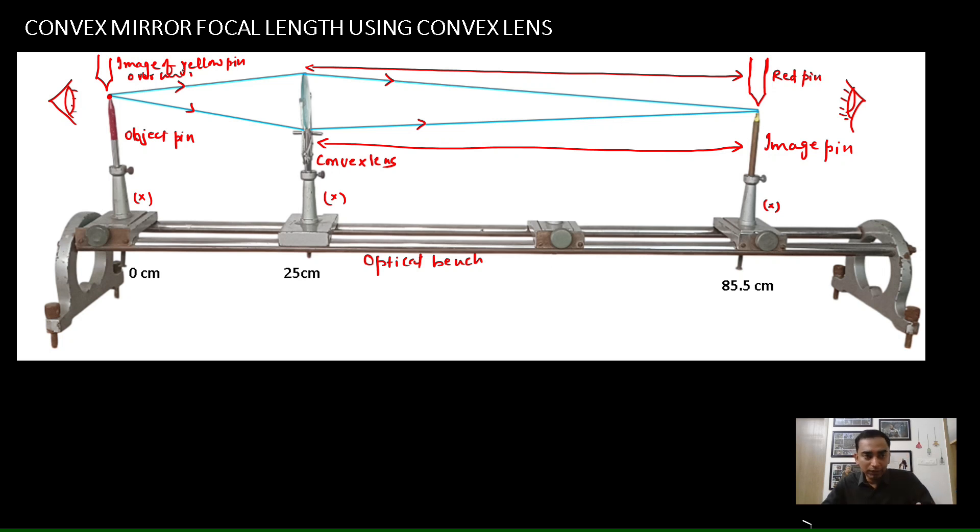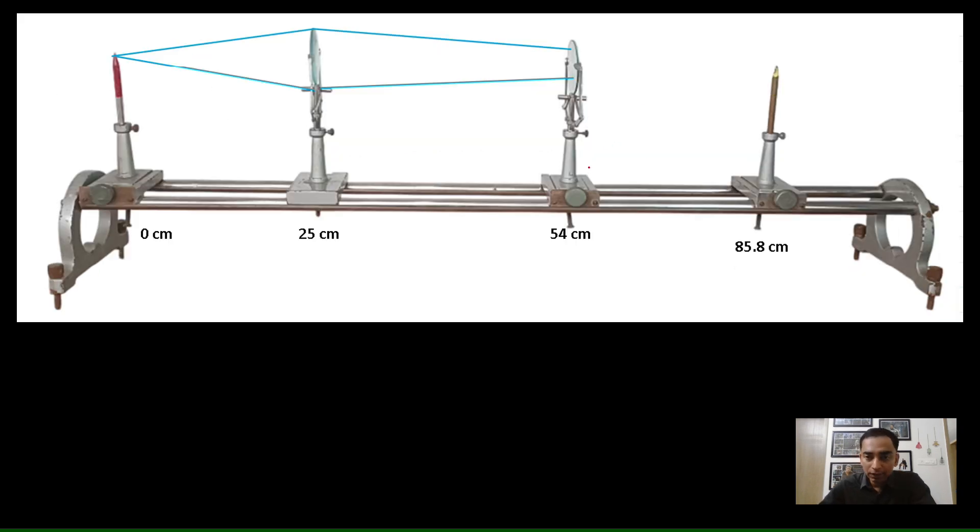But it does not matter. So, I chose to see from this side. So, this is my object pin, the convex lens and the image pin. Then I remove the parallax error. Now in the next case, I had placed a convex mirror by trial and error method somewhere over here.